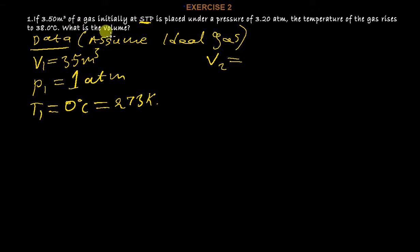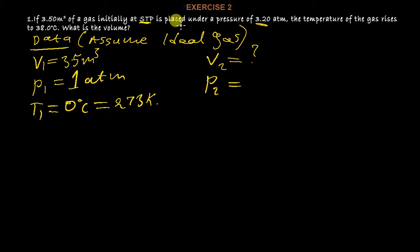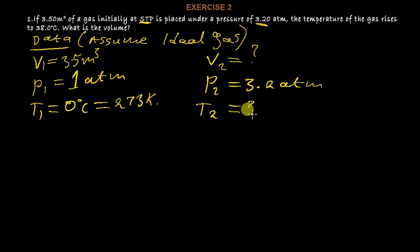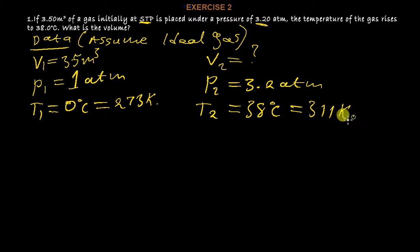V2 is what we're asked to find — the volume when the temperature has been raised to 38 degrees. We don't have V2. P2 is given as 3.2 atm. T2 is 38 degrees Celsius, which converts to Kelvin by adding 273: 38 plus 273 gives 311 Kelvin. So that's our T2.